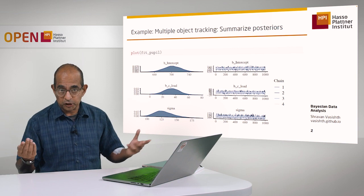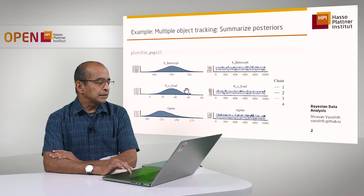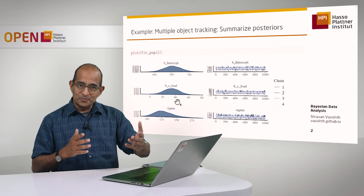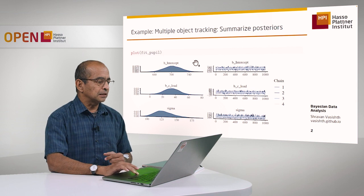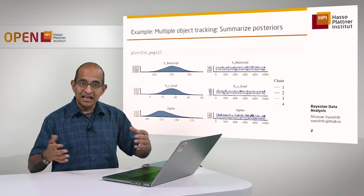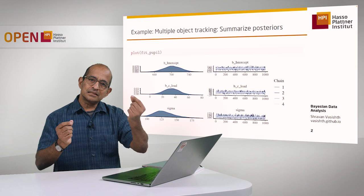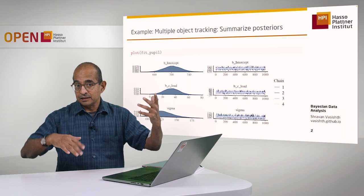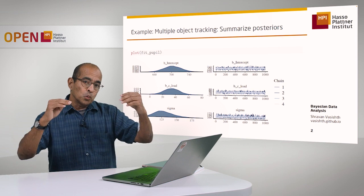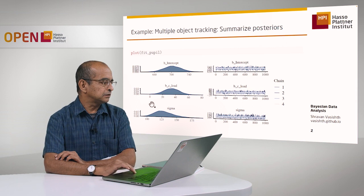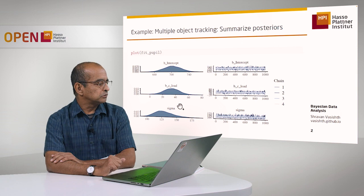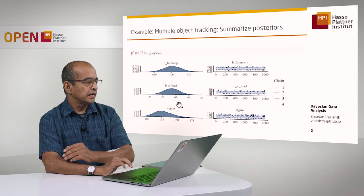What is more interesting is to look at the posterior distribution of the slope parameter, because that's telling me the range of variability in pupil size when I increase attentional load by one unit. The intercept is telling me the average pupil size — because I centered the predictor, the intercept represents the grand mean, independent of any attentional load. And the slope means that when you increase attentional load by one unit, the increase in pupil size is represented by this posterior distribution — roughly, the pupil size would increase by about 10 to 60 units with every unit increase in attentional load.